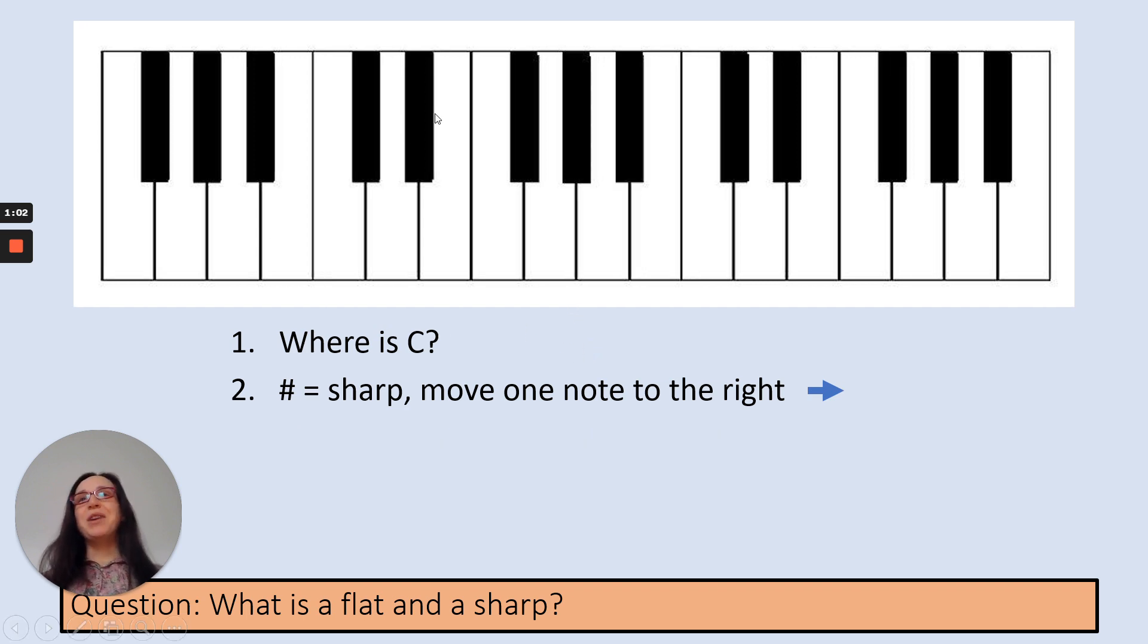So where is C? We know C is to the left of the two black keys. Sharp, this symbol here, means move one note to the right. So let's look at what that really means. That's a C. That's a C sharp, that black note there.